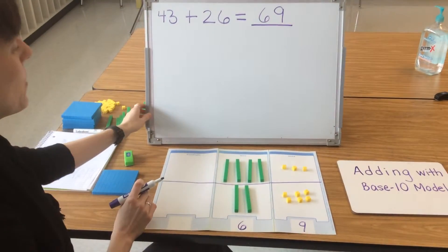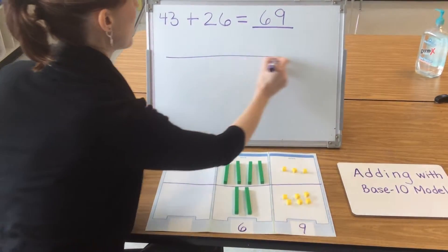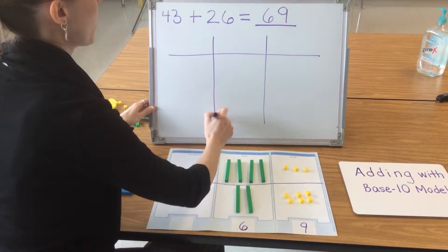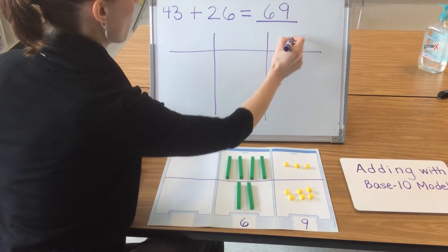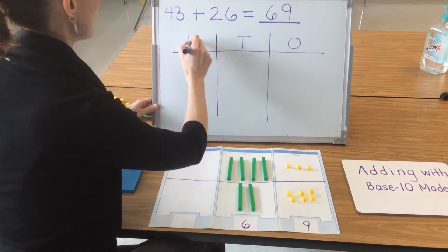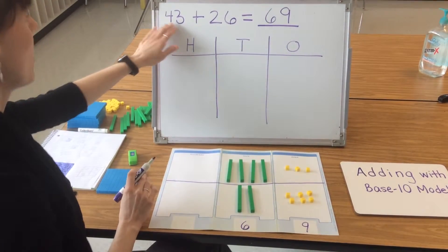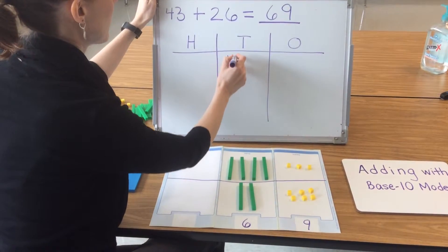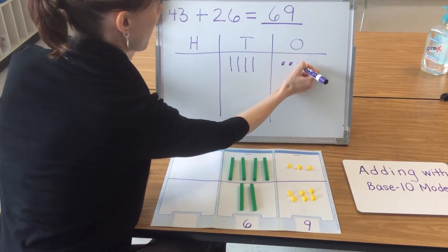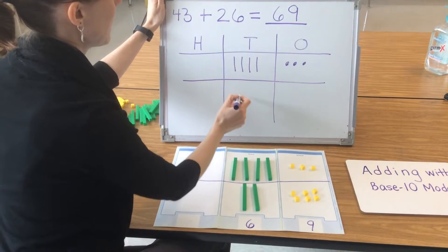Now let's solve this problem by drawing a pictorial model. The first thing students will need to do is to make an HTO chart on their paper. They need three columns labeled with an O for the 1s, a T for the 10s, and an H for the 100s. I start by drawing 43 with four 10s and three 1s. I separate my quantities and then I model 26.